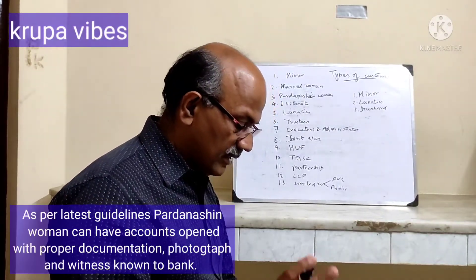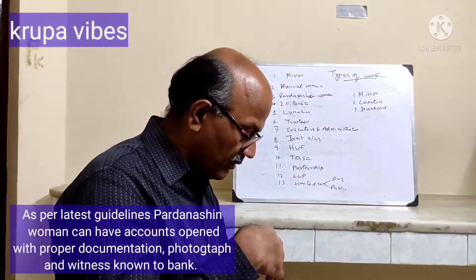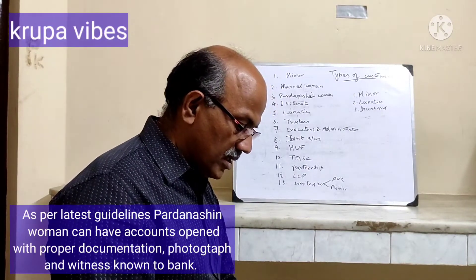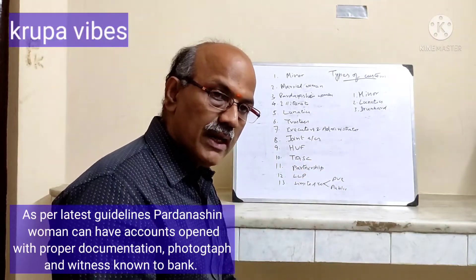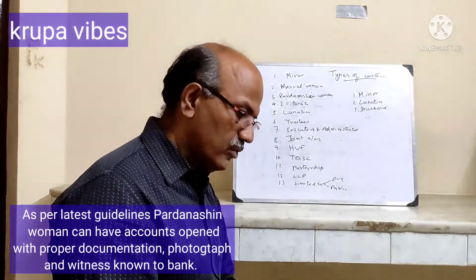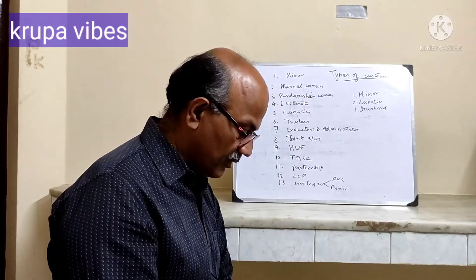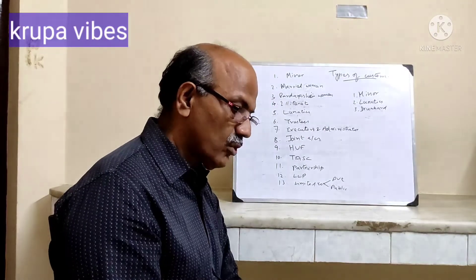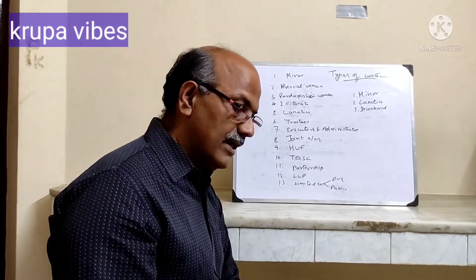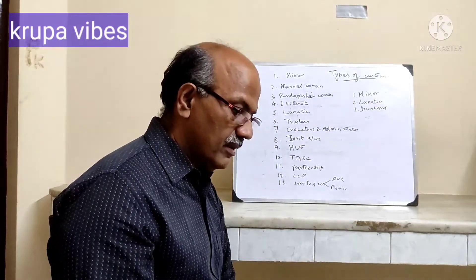What is a pardanashin woman? She does not deal with people other than members of her own family — she is always covered with a veil across the face. Any contract entered into by her might be subject to undue influence and may not have been made on her free will, so it is not a contract free from all defects. The banker should therefore take due precaution in opening an account in the name of a pardanashin woman. As the free will of such a woman cannot be ascertained, the banker generally refuses to open an account in her name.